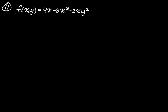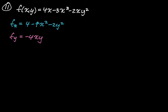Number 11: f(x, y) = 4x - 3x³ - 2xy². We need partial x: 4 - 9x² - 2y². You can see this might get complicated. Partial y: the 4x and -3x³ terms go away since they have no y, and -2x is a coefficient, so we get -2x · 2y = -4xy.